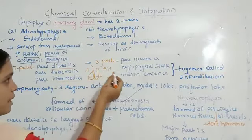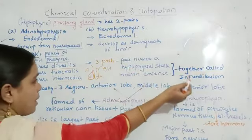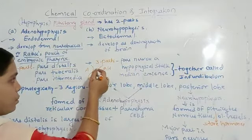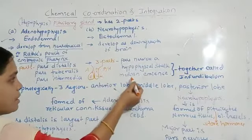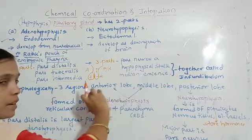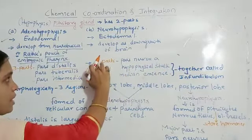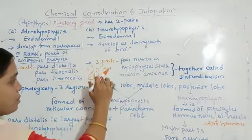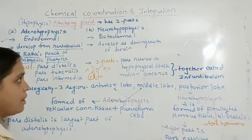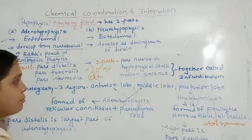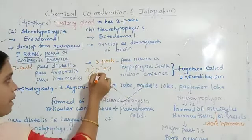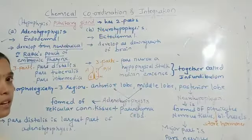The median eminence and hypophysis stalk together are called the infundibulum. Below the hypothalamus is the median eminence, and the stalk-like structure is the hypophysis stalk, which connects the hypothalamus to the posterior part of the pituitary gland. The pars nervosa is the important part of the neurohypophysis.